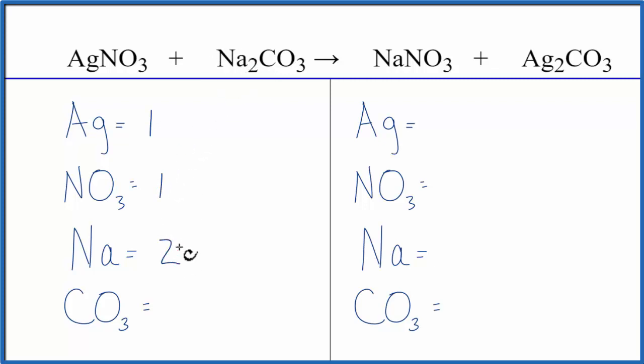We have two sodiums, and then CO3, that's a carbonate. Carbonate's another polyatomic ion, which is counted as one thing because we have one here and then one here, so we have one carbonate ion.